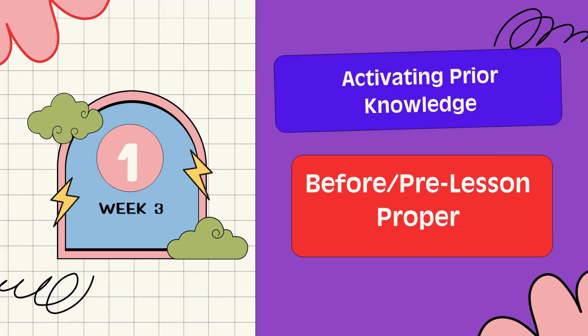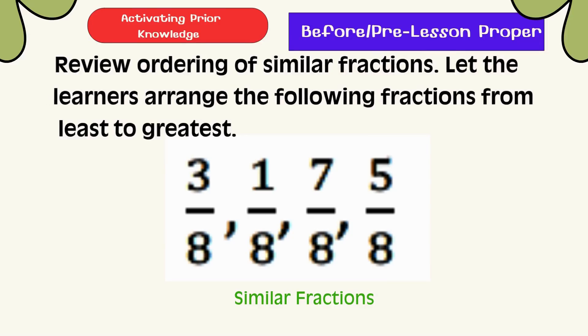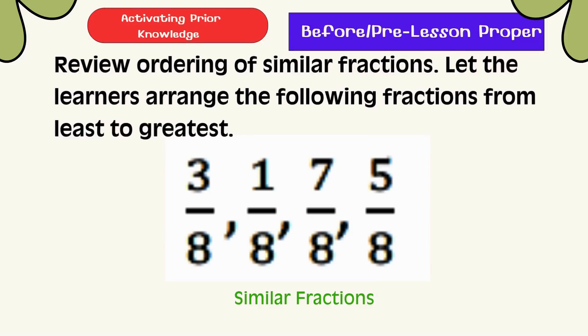Activating Prior Knowledge. Let's review ordering of similar fractions. Let the learners arrange the following fractions from the least to greatest.